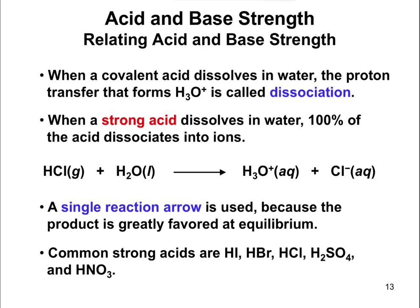Acids and bases, as we talked about previously — acids are proton donors, bases are proton acceptors. Now, we can talk about how strong an acid is or how strong a base is. When we talk about acid and base strengths, we're really talking about how well something transfers that proton, or accepts the proton in the case of a base. When an acid dissolves in water, the proton that forms the hydronium ion H3O+ — this is called dissociation. In other words, the proton has to dissociate from the acid.